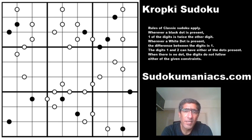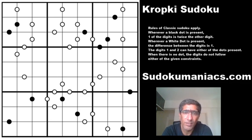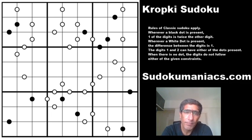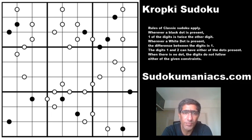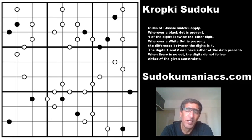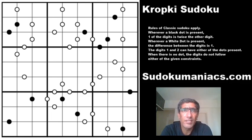Let's look at some basic things we need to have cleared in our mind before we start solving. There are only four sets of digits that conform to the constraint of the black circle — that is, one digit is twice the other — and they are 1 and 2, 2 and 4, 3 and 6, and finally 4 and 8. Notice we did not mention the digits 5, 7 and 9. So basically, wherever there are black dots between two cells, we can safely eliminate 5, 7 and 9 as options for those cells.